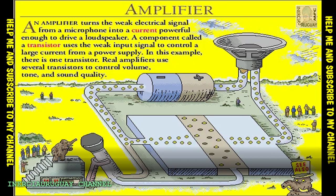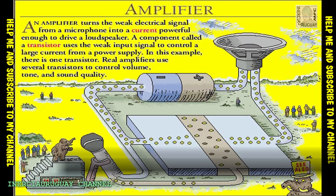When the microphone diaphragm moves up, the electron flow reverses. Electrons flow from the microphone into the base, where they fill up the electron holes and block the flow of electrons from the emitter to the base. No current flows.